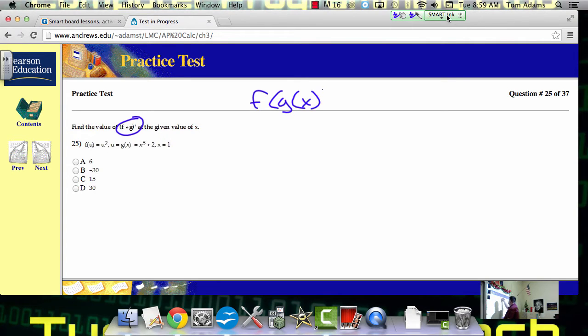So you just plug in the g or square it. Yeah, so it would be g is x to the fifth plus two squared. And so what they're really asking us is what the heck is f prime of g of x.